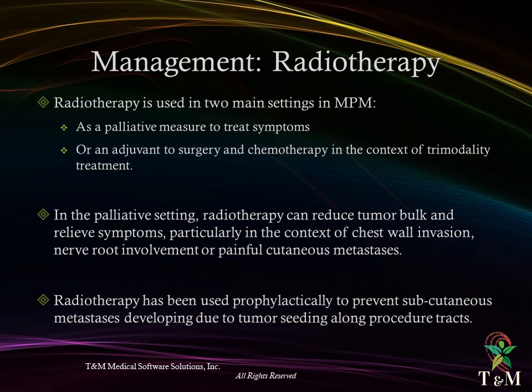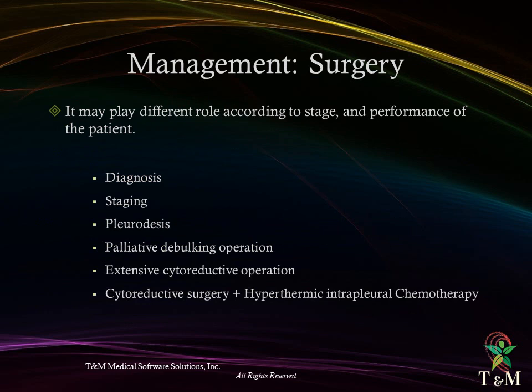Radiotherapy has been used in two main settings in mesothelioma: as a palliative measure to treat symptoms, or as part of a trimodality treatment approach. In the palliative setting, it can be used to reduce tumor bulk and relieve symptoms, particularly chest wall invasion, nerve root involvement, and pain. It has also been used prophylactically to prevent subcutaneous metastasis along procedure tracts.